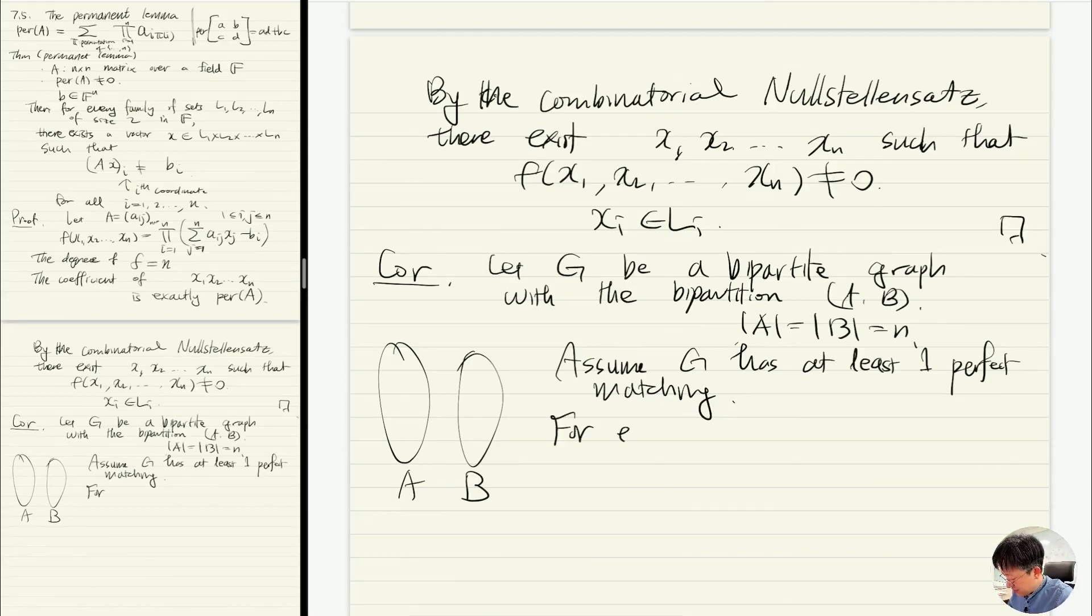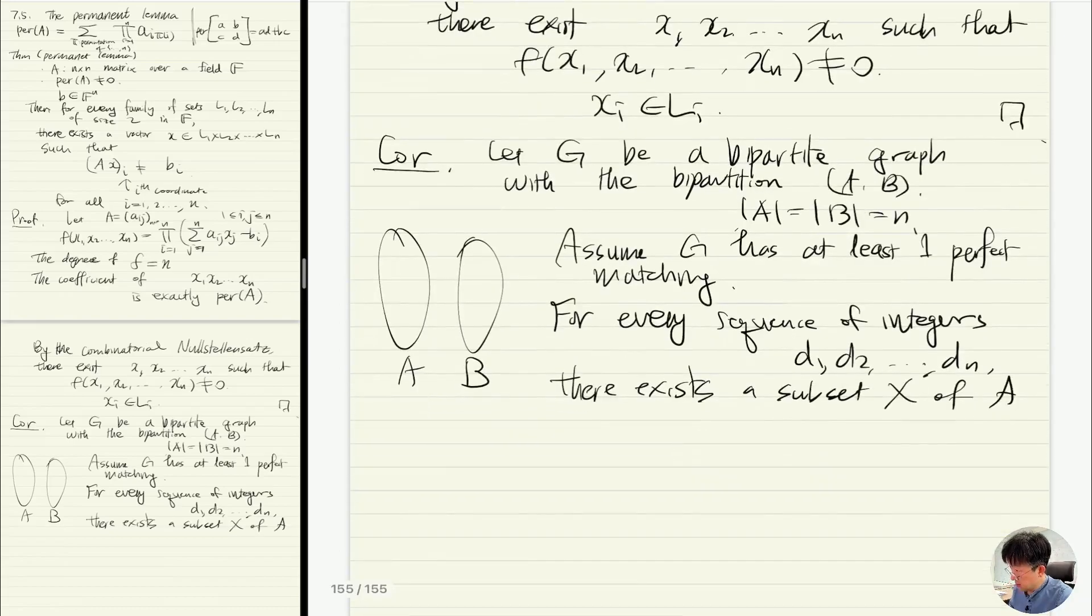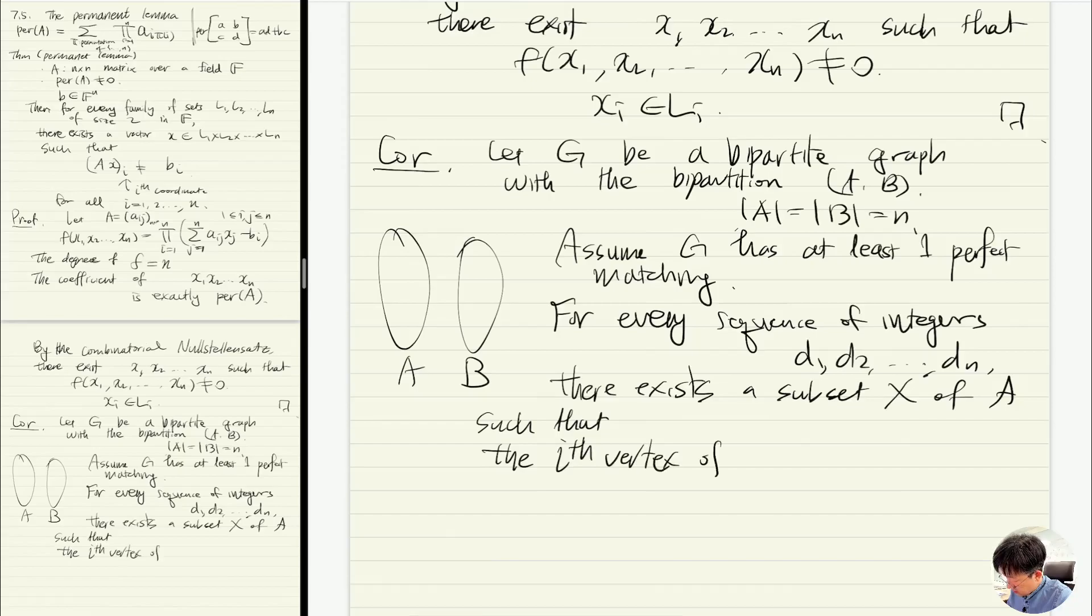Then what we're going to prove is for every sequence of integers d1, d2, ..., dn, there exists a subset x of A such that the i-th vertex of B has exactly... I mean, such that the number of neighbors of i-th vertex of B in x is not equal to d_i.